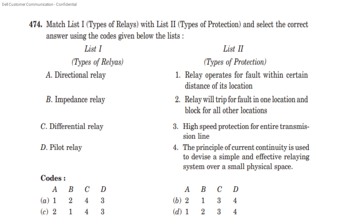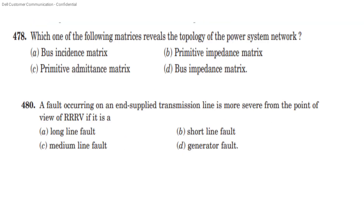Question 6: Match the following types of relay and type of protection. Directional relay: trips for fault in one direction and blocks for all other locations. Impedance relay: operates for fault within a certain distance of its location. Differential relay: correct match, option C. Pilot relay: uses the principle of current continuity to devise a simple and effective relaying system over a transmission line — high speed protection for the entire transmission line. Which of the following matrices reveals the topology of the power system network? The answer is option A — Bus Incidence Matrix.